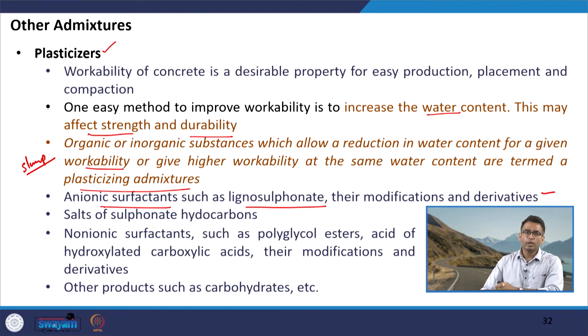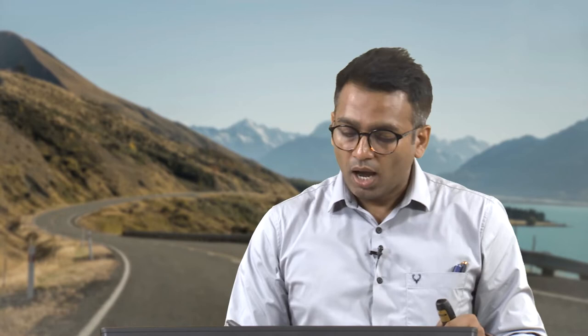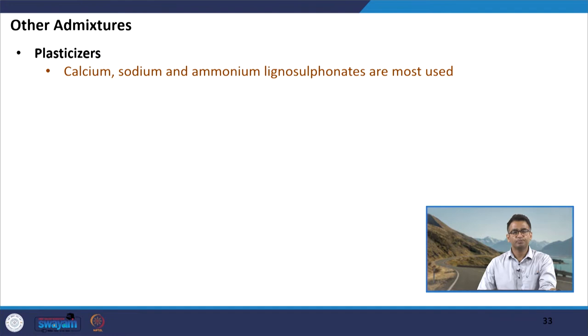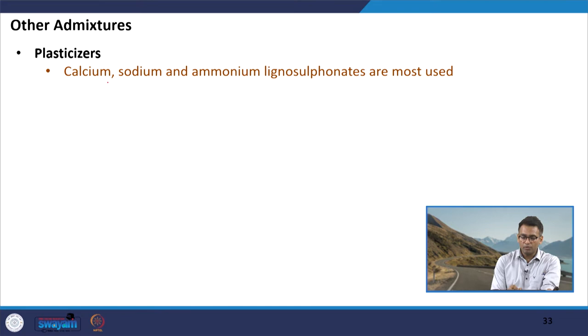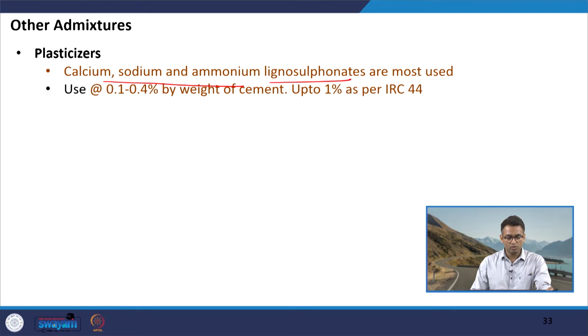Plasticizers can also be of non-ionic surfactant nature. For example, we have polyglycol esters and hydroxylated carboxylic acids (COH), as well as their modifications and derivatives. Other products such as carbohydrates can also be used as plasticizing agents. Among all these, the most popular materials fall under calcium, sodium, and ammonium lignosulfonates, which are the commonly used plasticizers for concrete production.